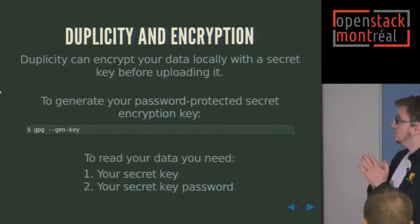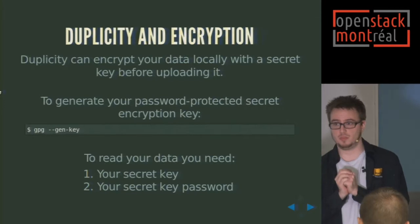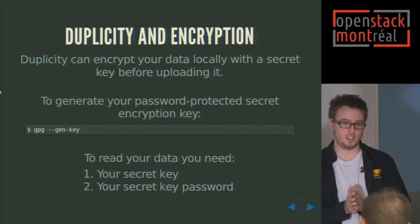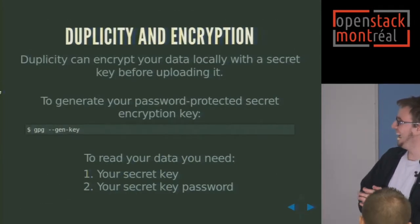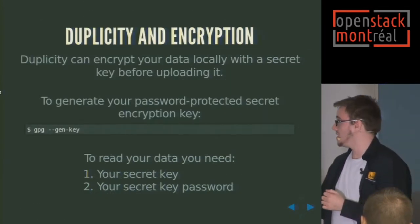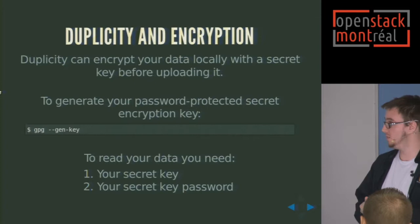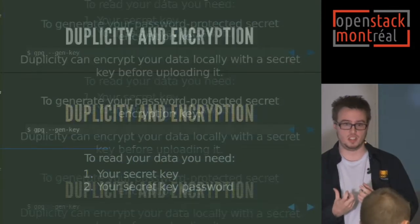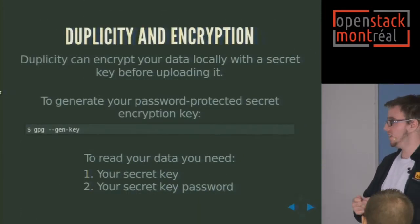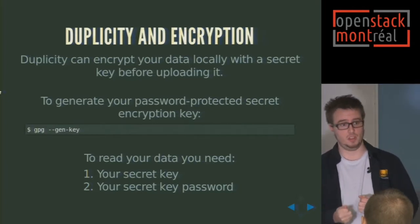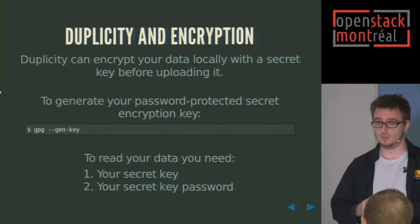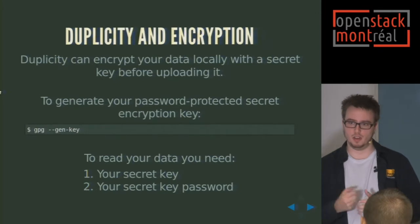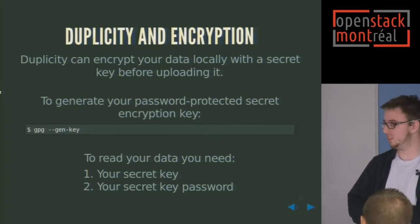Duplicity and encryption. Duplicity is able to encrypt your files before uploading them to the cloud — and please do, because you don't want the NSA to look at your cat pictures. Generating a password-protected secret encryption key — you can do that with GPG. This private secret key is going to be password-protected, so Duplicity will encrypt your files, and even if someone gets a hold of your key, if they don't have your password, the key is no use. It's a kind of two-factor authentication, so only you can read your files.